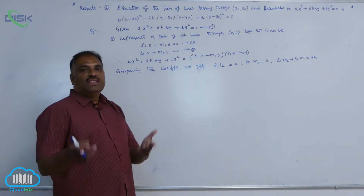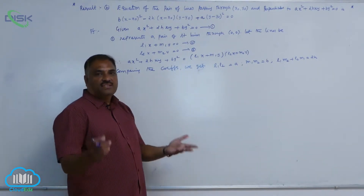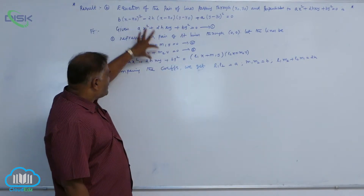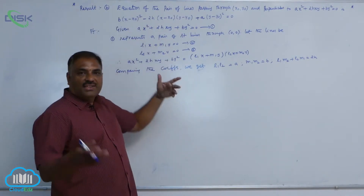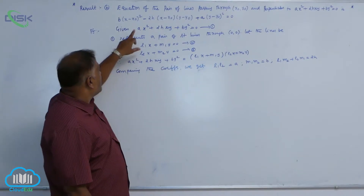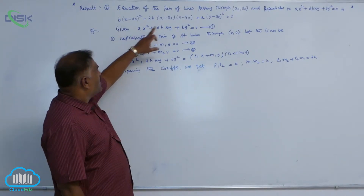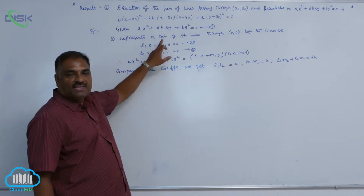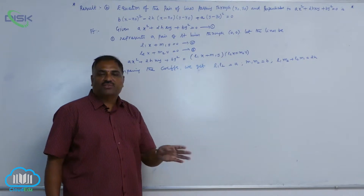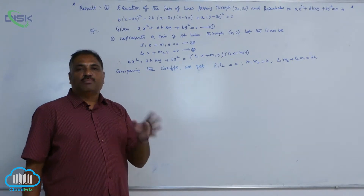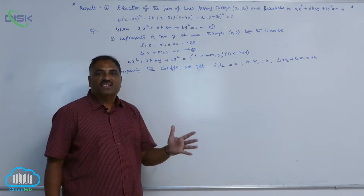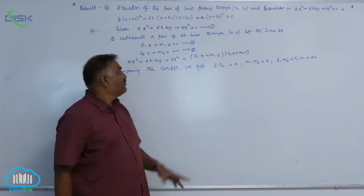In the previous result number 1, we carried out a proof. In result 2, we are carrying out the same. We know that the given equation ax² + 2hxy + by² = 0 always represents a pair of intersecting lines passing through the origin.